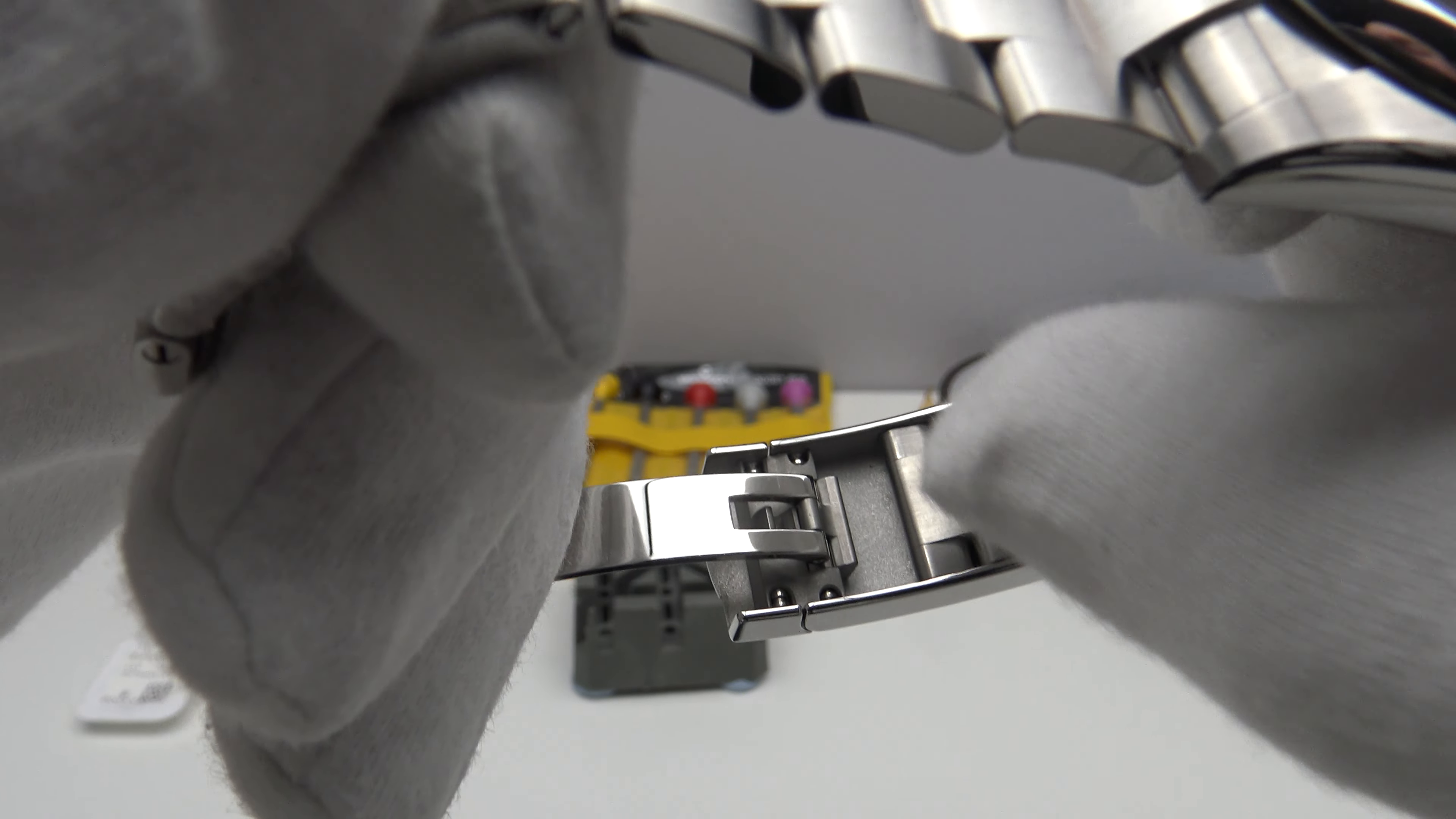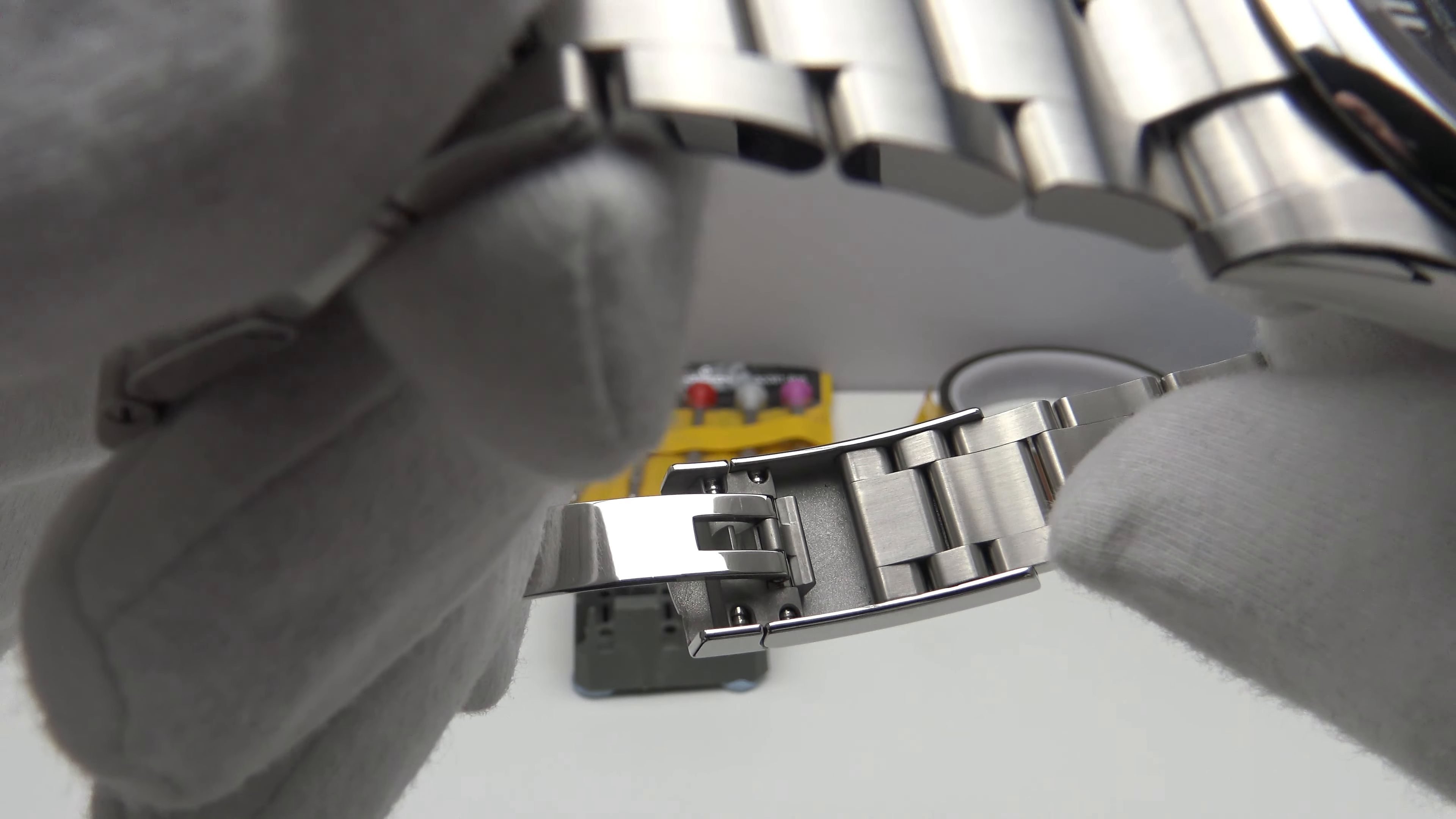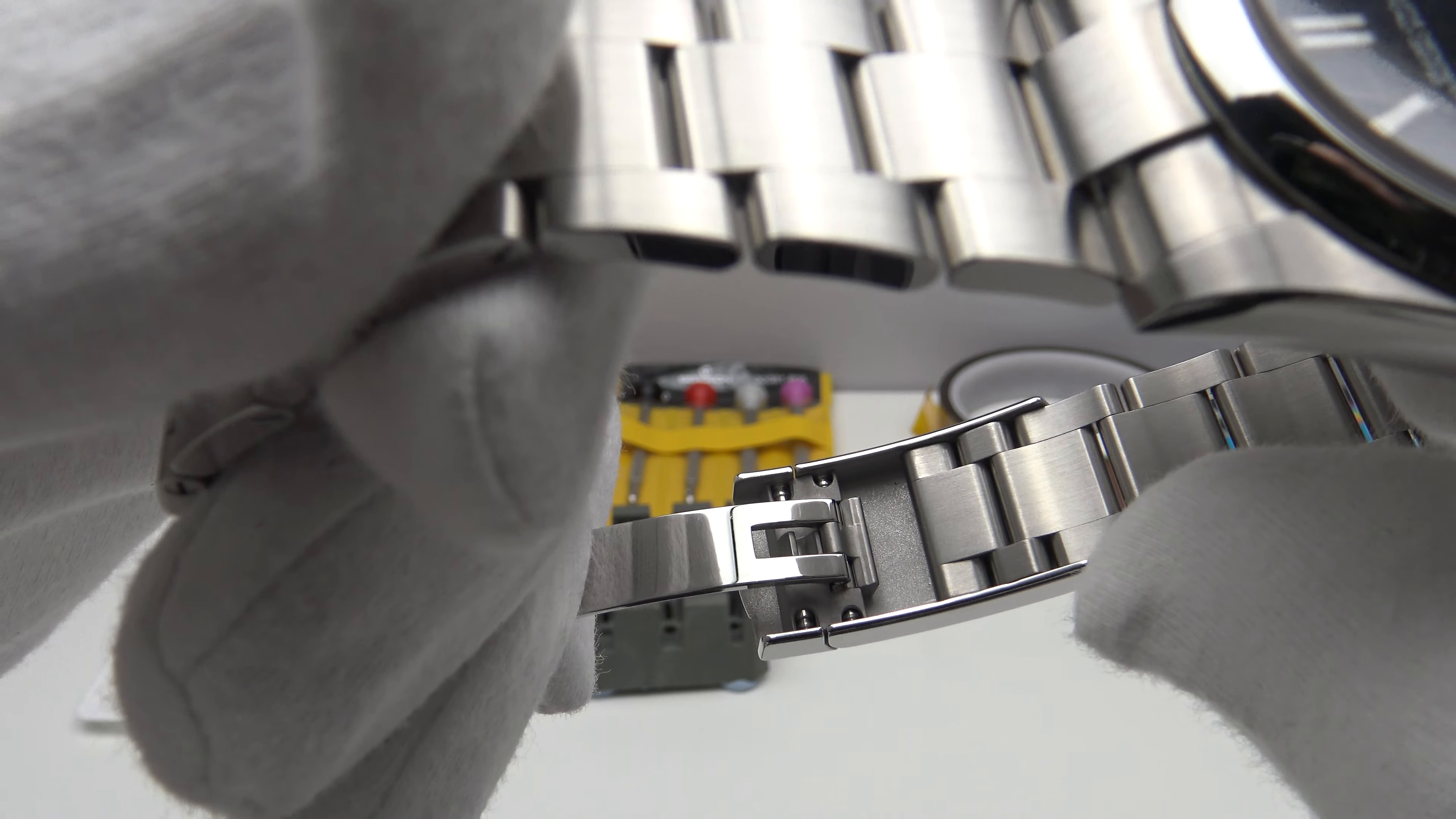Now obviously it's not as good as a glidelock. I really think that Rolex should introduce the glidelock clasp to all their watches in their collection. But however, they're not doing that. They're only doing it on the Submariner and Submariner date. And I think that's a mistake. I really think the glidelock is an improvement.